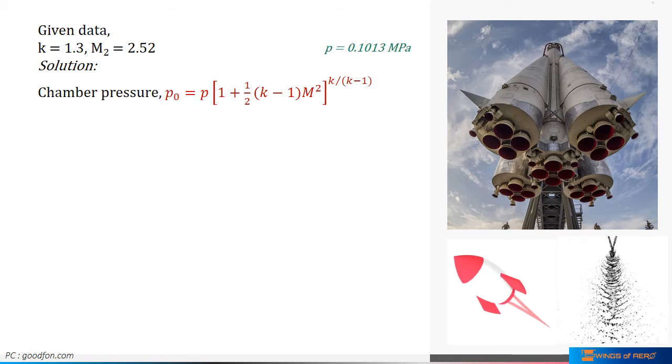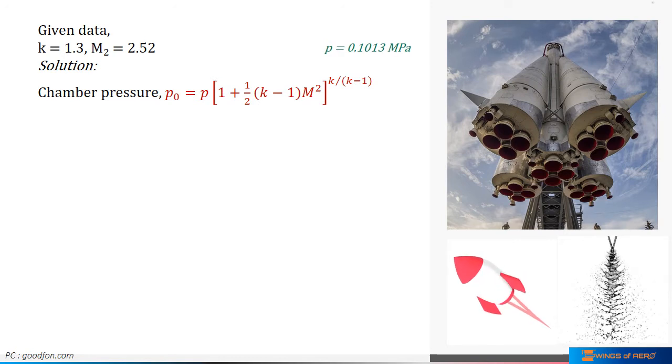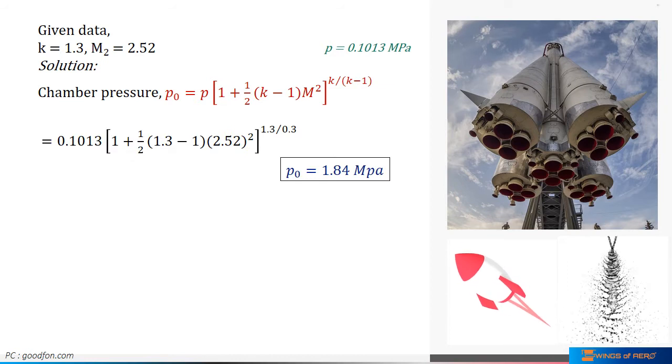Thus, we can write, P0 is equal to P into 1 plus 1 divided by 2 into k minus 1 into M square to the whole power k divided by k minus 1. Where, P0 is the chamber pressure which we have to find out. And, P is the atmospheric pressure which is 0.1013 MPa. And, k is the specific heat ratio and M is the Mach number of rocket engine. Now, solve this equation with known values.